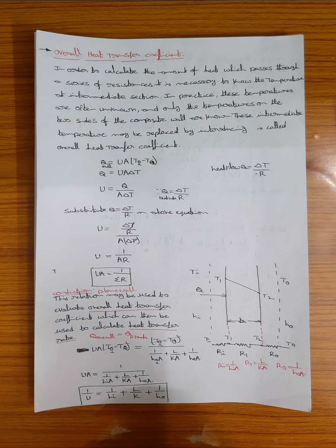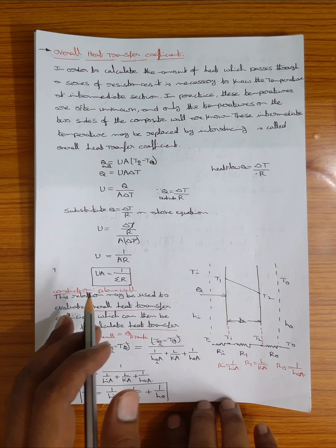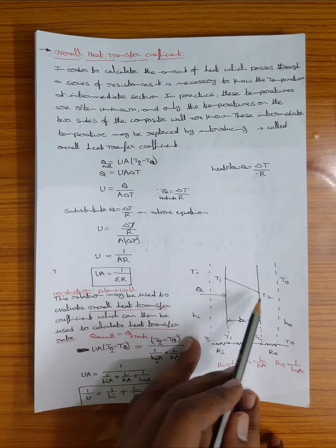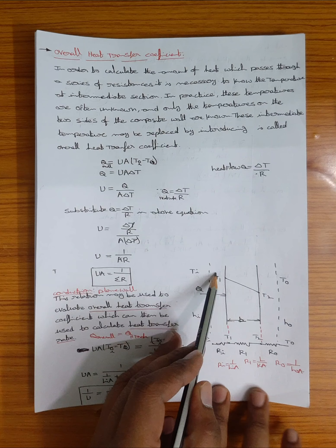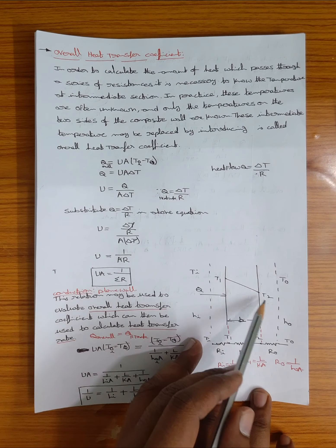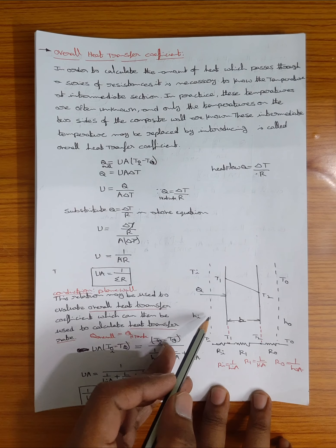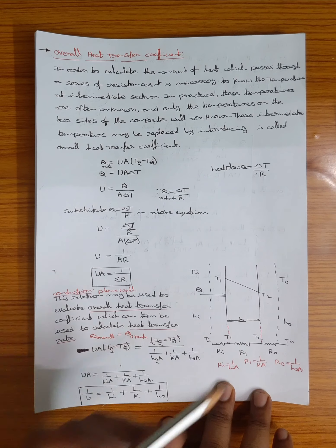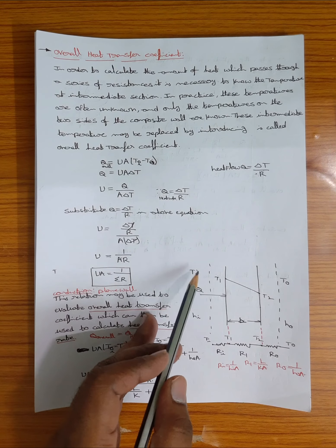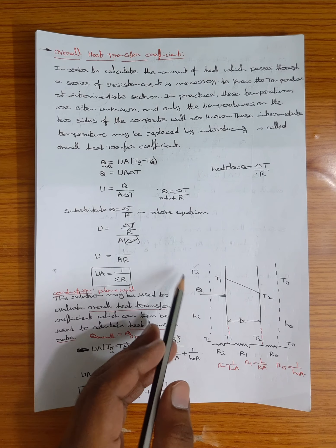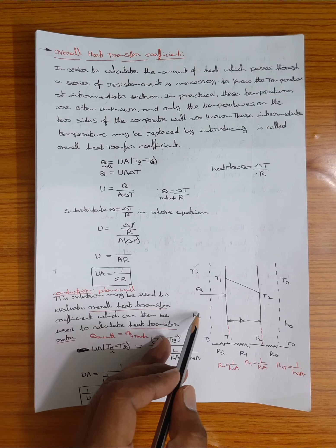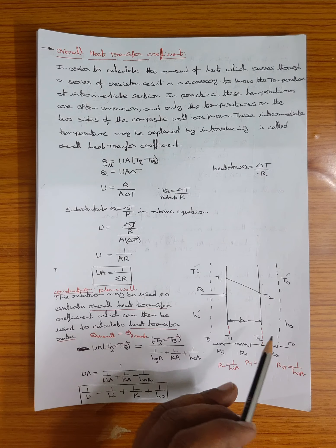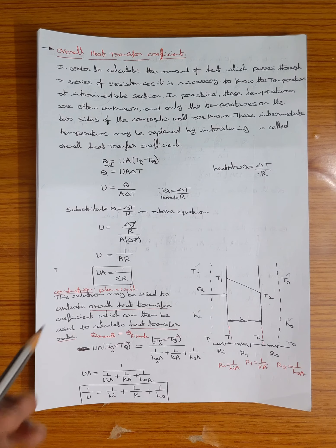In practical applications, temperatures inside the wall are often unknown and only the temperatures on the two sides of the composite wall are known — T1 (internal) and T2 (outer). We apply convection inside and outside the plane wall, where TA is the internal temperature and HA is the convective heat transfer coefficient at the internal level.